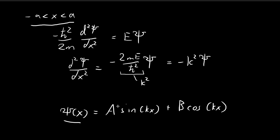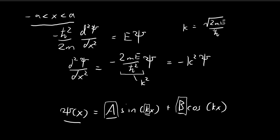Our goal is to find what the constants should be. We have three unknowns: A, B, and k. Note that k equals the square root of 2mE/ℏ², so k carries the uncertainty of the energy level — if we don't know the energy level, we don't know k. So essentially we have three unknowns: A, B, and k.